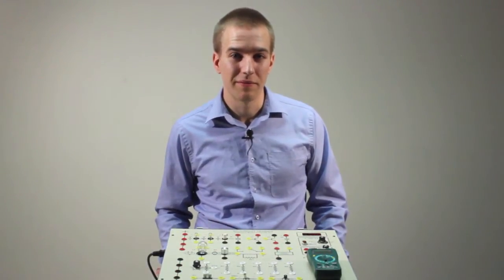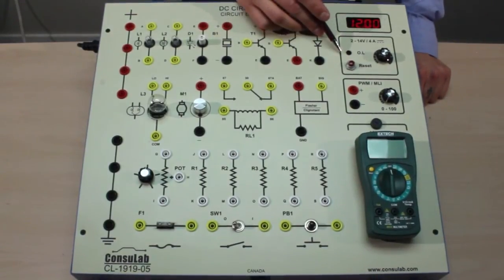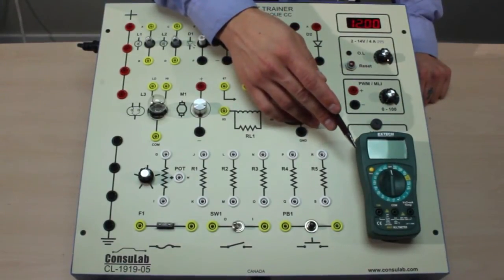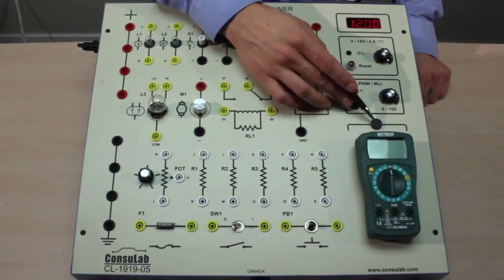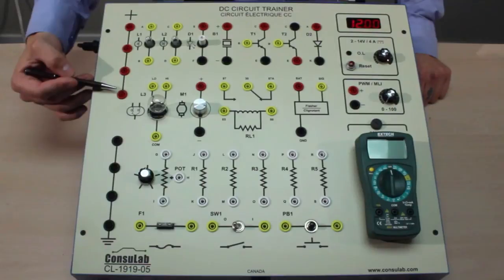Now I'd like to show you some of the features of the product. On the trainer we have a built-in variable DC power supply with overload protection, pulse width modulation, a built-in multimeter that has no need for batteries since it's powered off the trainer with an external fuse. We have our power and ground.